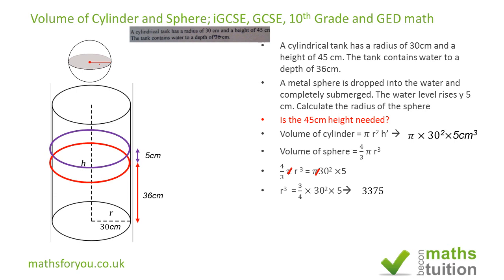If we then take the cube root of both sides, the cube root of R cubed is R, and the cube root of 3375 is 15. So the radius of the sphere is 15 centimeters.